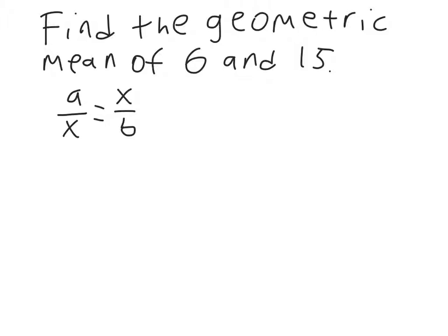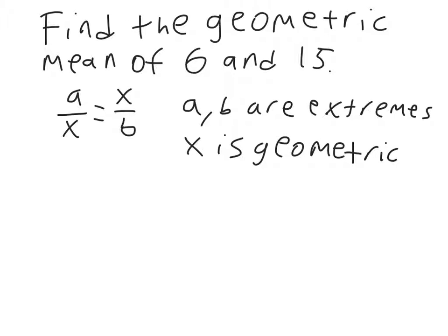So, what you do with that is A and B are what are known as extremes. These are the numbers you're trying to find the geometric mean of. So, in this case, 6 and 15 are your extremes. And then, X is your geometric mean. So, if you're going to set up this problem as a proportion, 6 and 15 are your extremes, and you're trying to find X. So, you would say 6 over X equals X over 15.